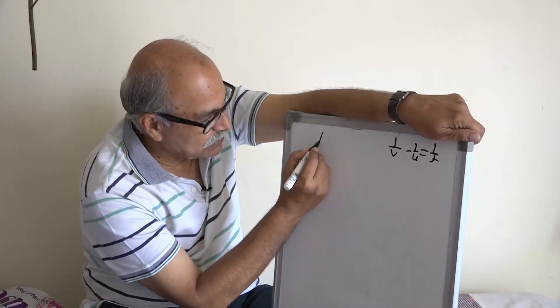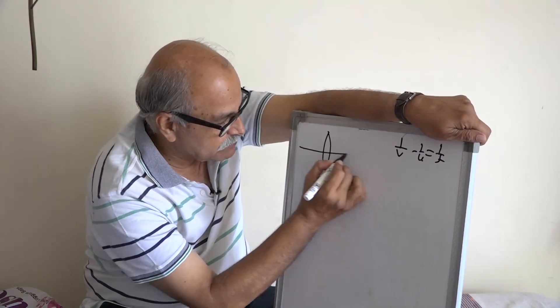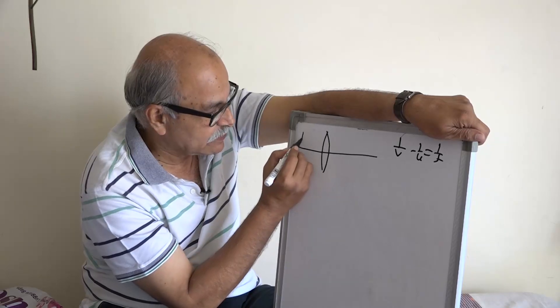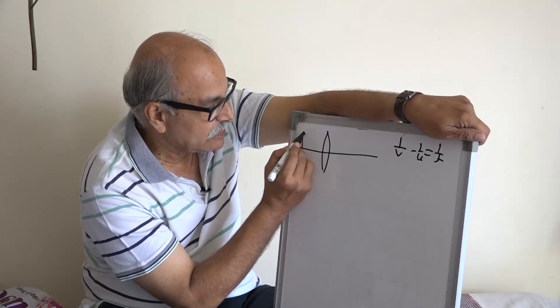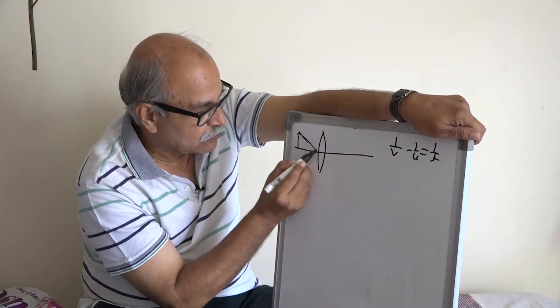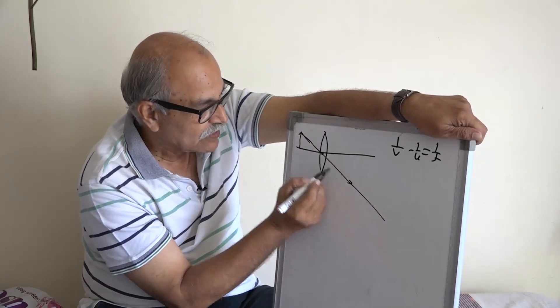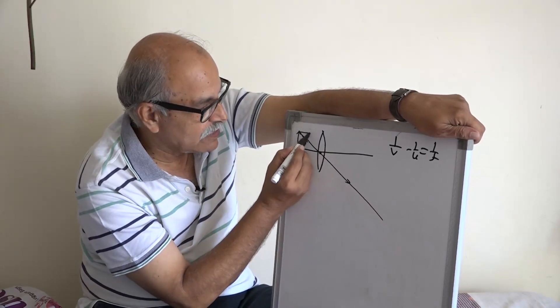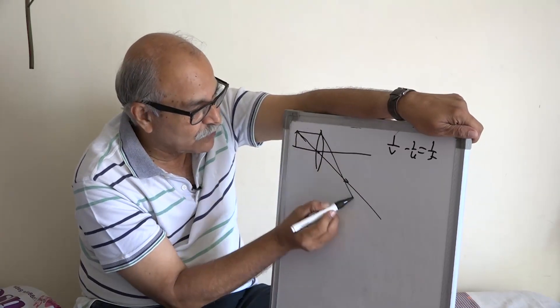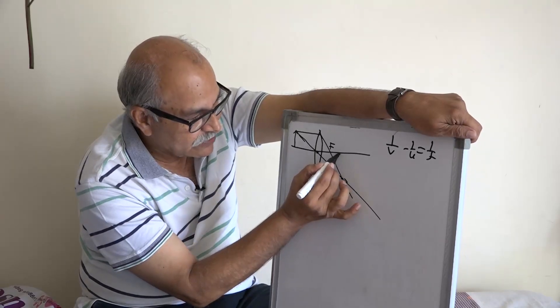If you remember the derivation, if you have this lens and then principal axis and suppose your object is somewhere here, then you draw a line going through the center and you say that it goes straight, and then you take a line which is parallel to the principal axis and then it goes through focus.